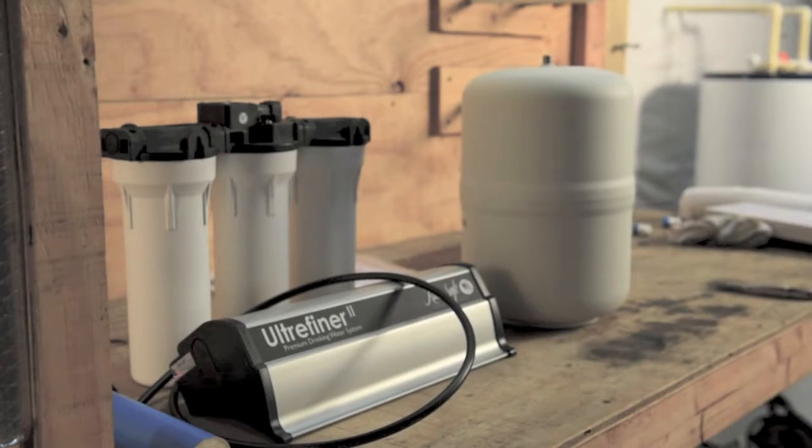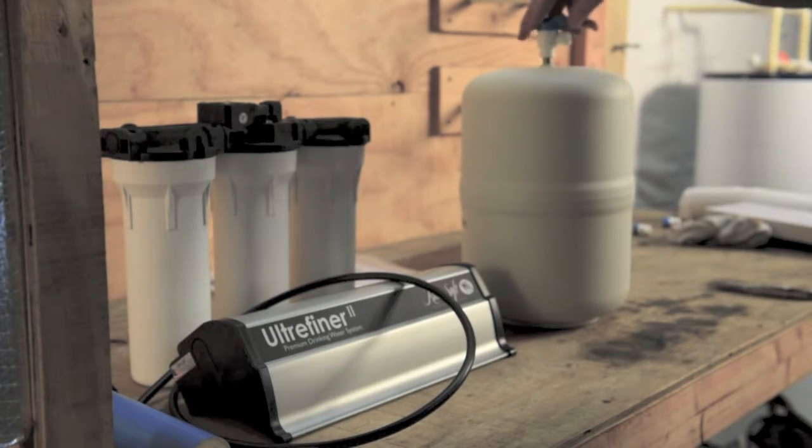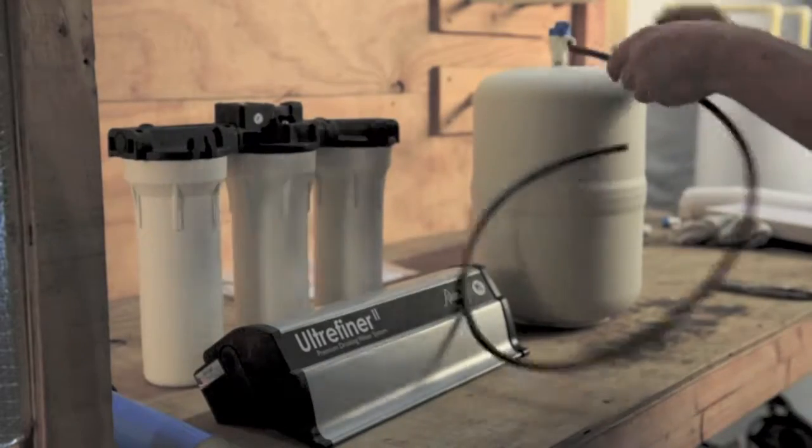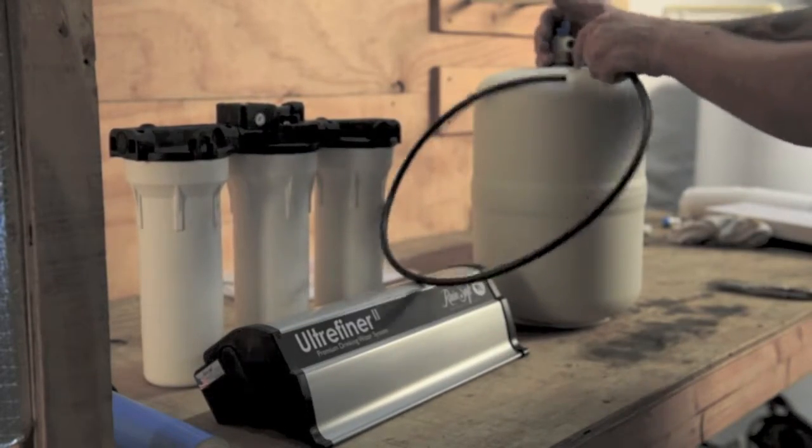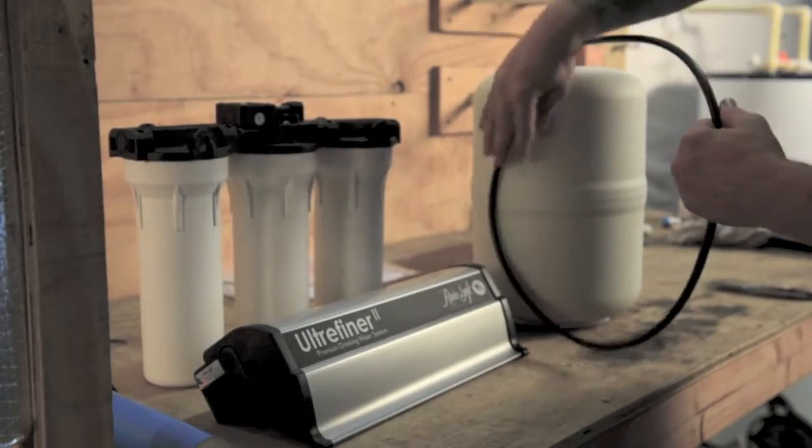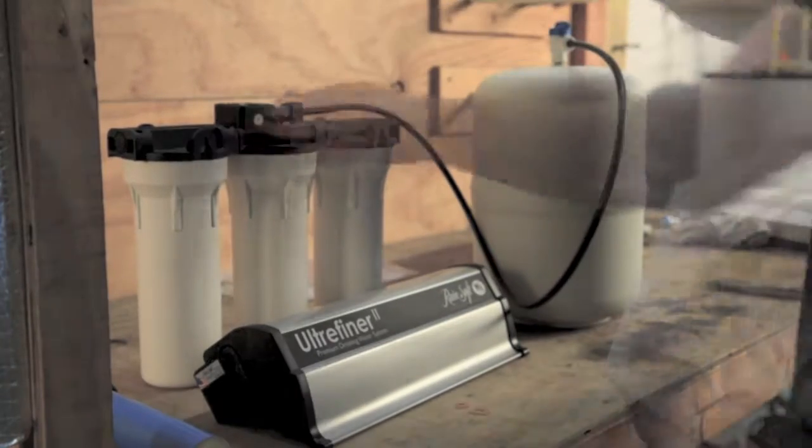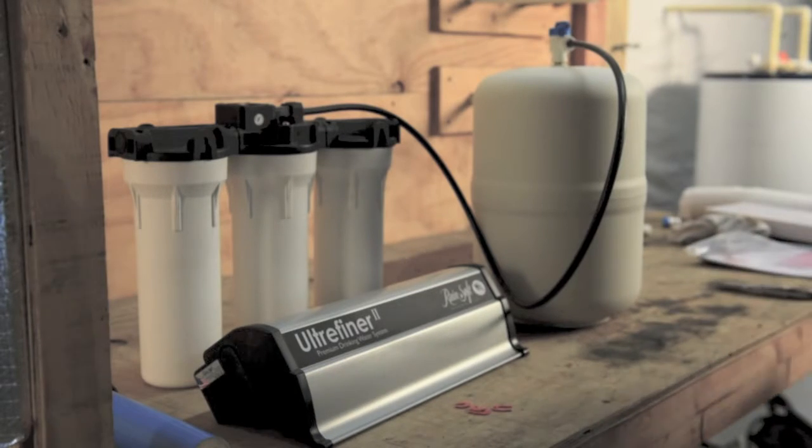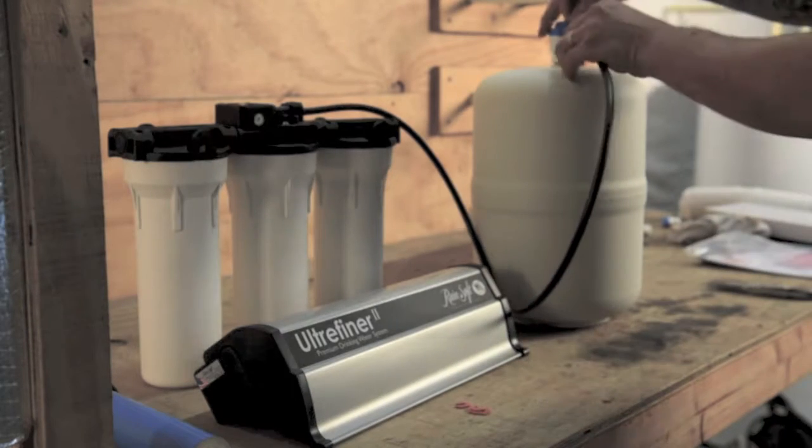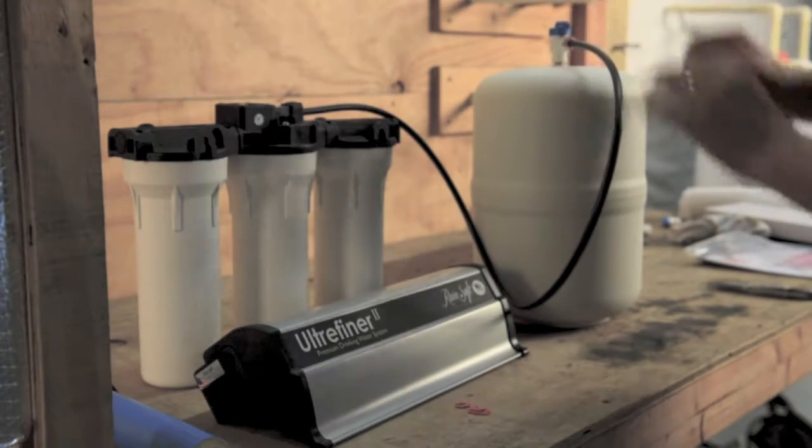Next, take the pressure tank. Thread on the shutoff valve that comes with the system and insert the three-eighths line into the shutoff. Take the other end of the line and insert into the hole on the fixture that says tank. Next, take your horseshoe clips to secure the John Guest fittings.